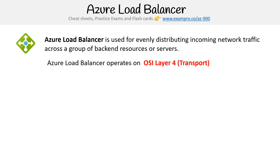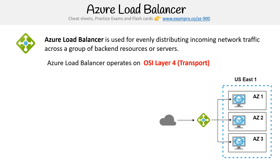So it doesn't understand HTTP requests — it's just sending packets back and forth. Here is a graphical representation. Imagine you have the internet, and somehow it's making its way to the load balancer. The load balancer is going to distribute that amongst your virtual machines — virtual machines being your servers. The great thing is you can have virtual machines in different availability zones, and the load balancer can distribute to those, and that's how we get high availability.